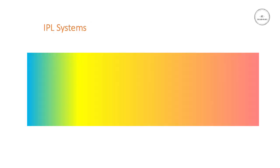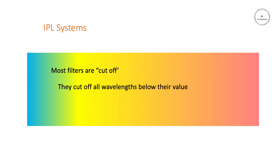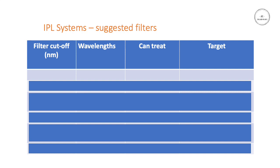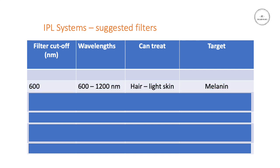In summary, most filters used in IPL systems are cutoff filters. They're designed to cut off all the wavelengths below the value of the filter, and all the wavelengths above that value will get through and onto the skin surface. If you have a filter around about 600 nanometers, then that will let through all the light between 600 and 1200 nanometers, and this is good to target melanin in hair. I suggest you use this for lighter colored skin because the epidermal basal layer should not be too badly damaged by this.